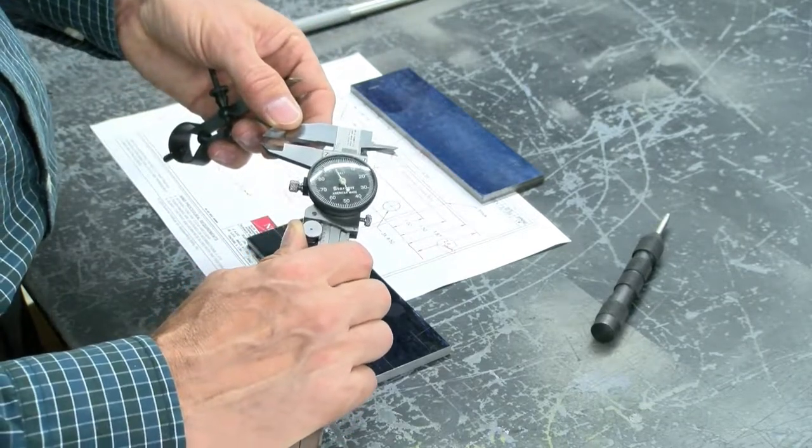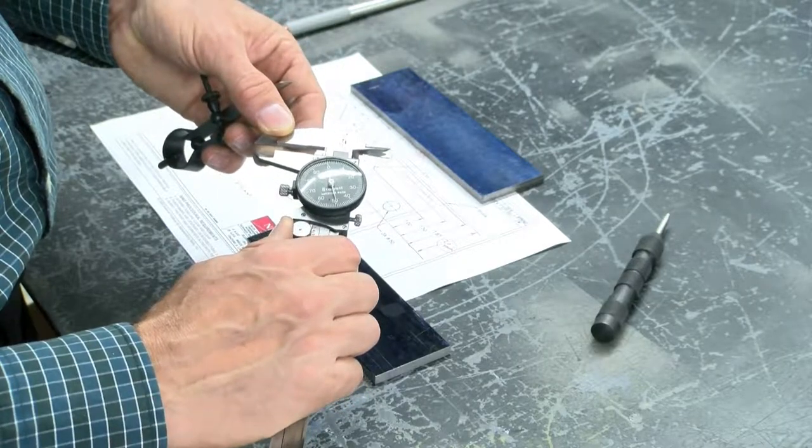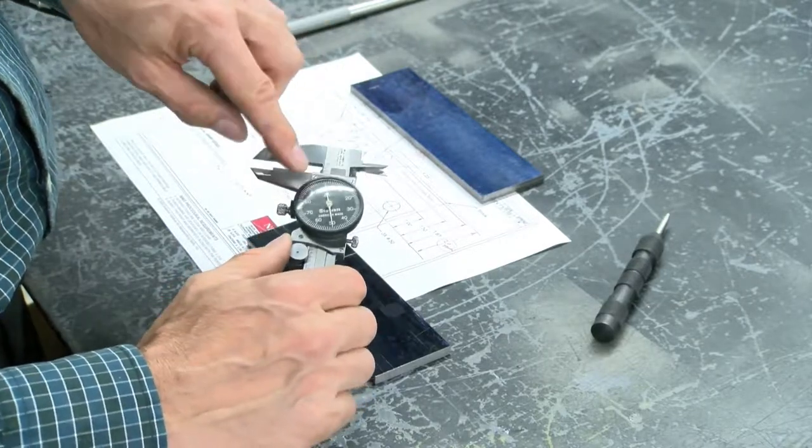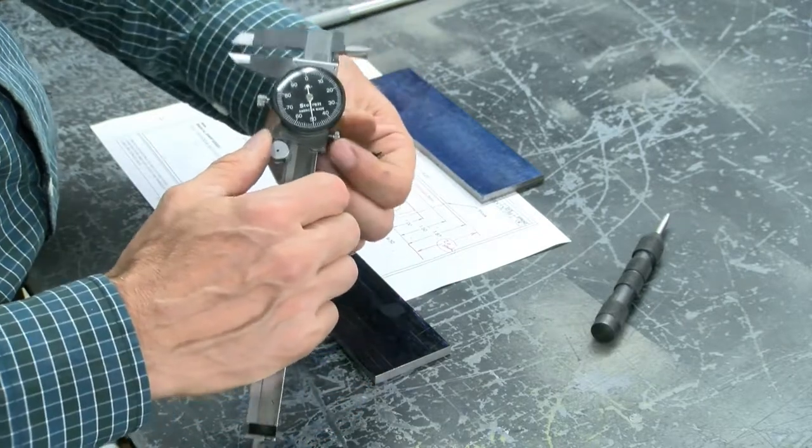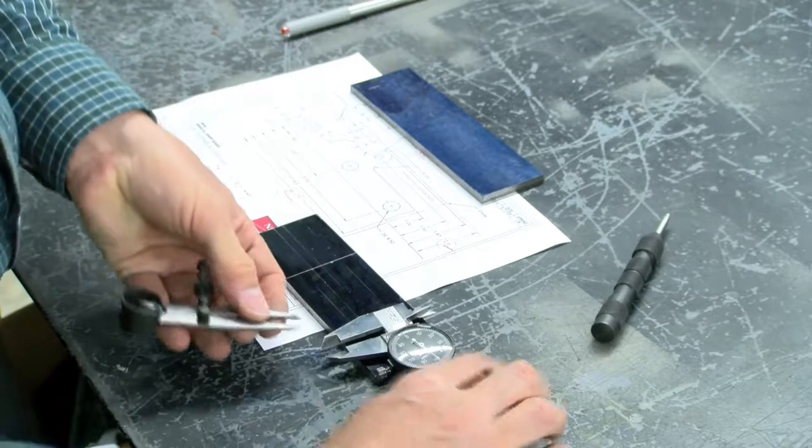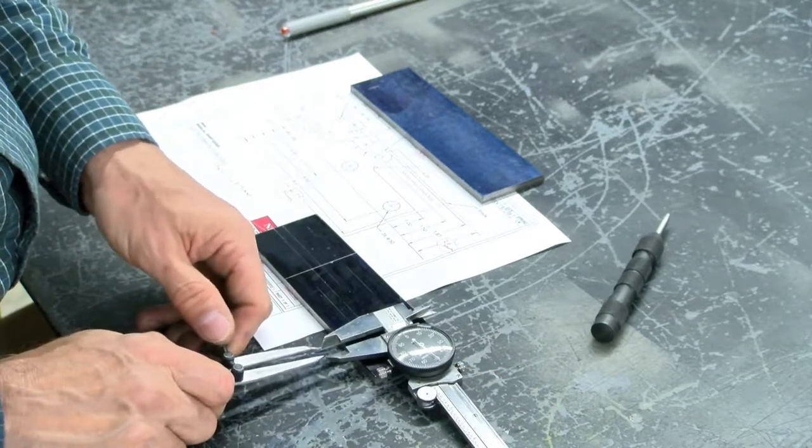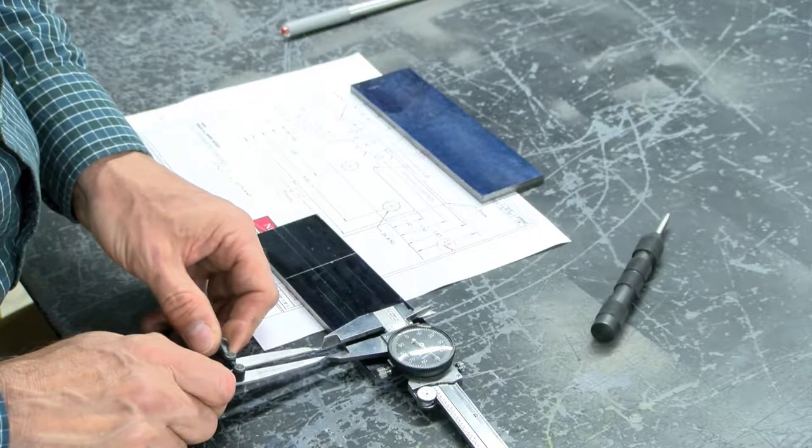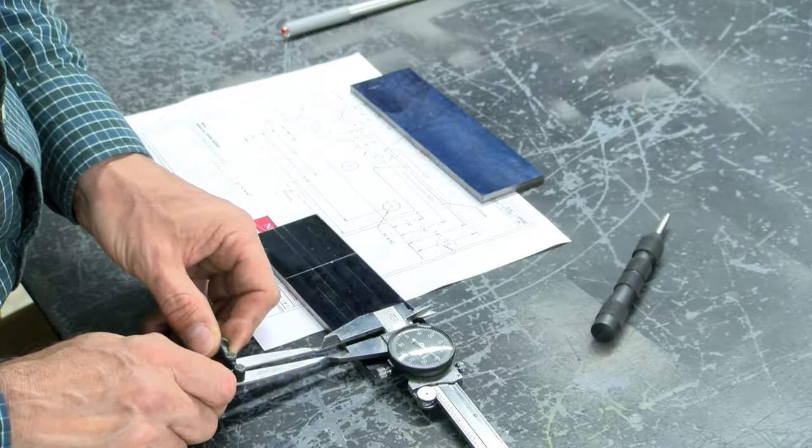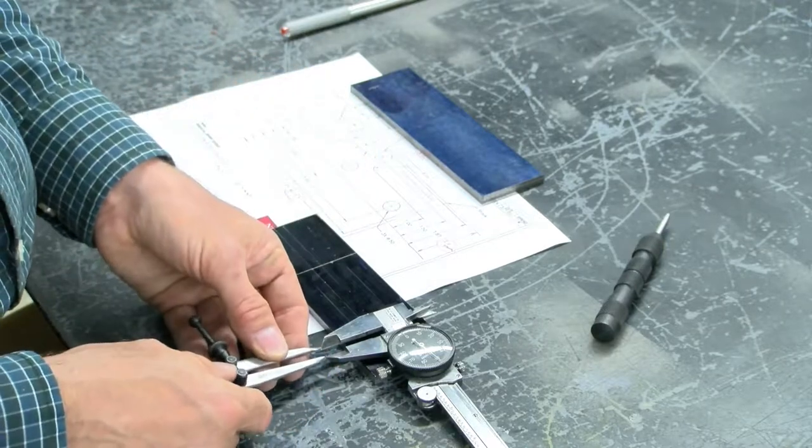Then come back to whatever the radius is. In this case, mine is 250 thousandths, so I'm at 200 plus 50. I'm going to lock this and estimate this on my tool. I'm going to hang it here. There are different techniques you can use—you can use gauge blocks. I'm using calipers just to get me an estimate.